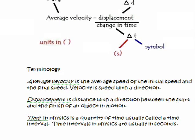Next, let's cover the terminology. Average velocity is the average of the initial speed and the final speed. Velocity is speed with direction — that's your difference between speed and velocity. Speed doesn't need a direction, but velocity does. That's why speed is considered a scalar and velocity is considered a vector. Your physics teacher will talk more about the difference.